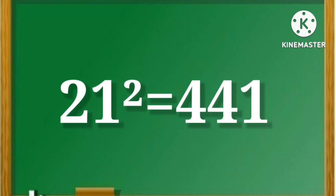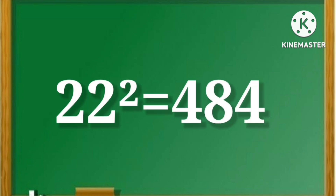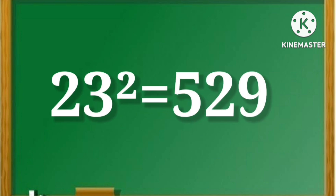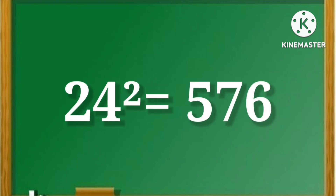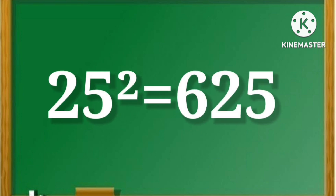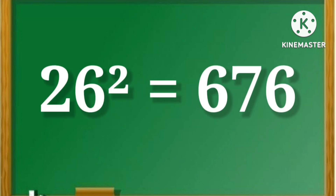21 squared is equal to 441. 22 squared is equal to 484. 23 squared is equal to 529. 24 squared is equal to 576. 25 squared is equal to 625. 26 squared is equal to 676.